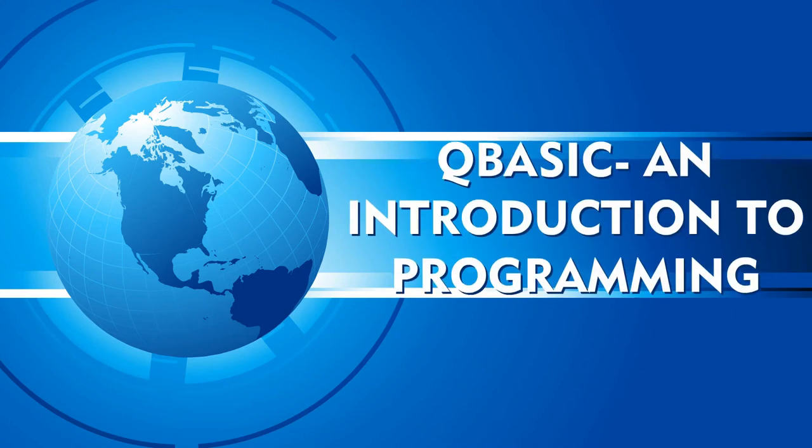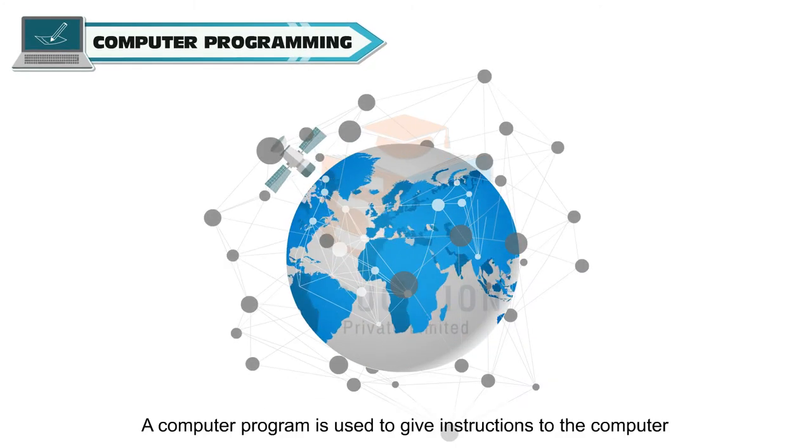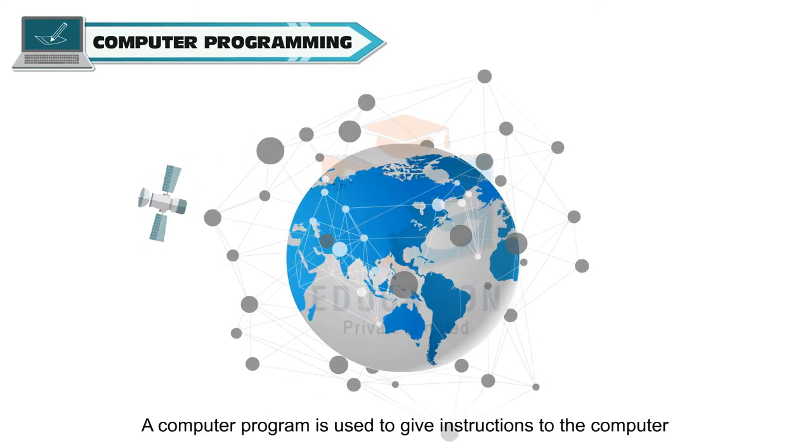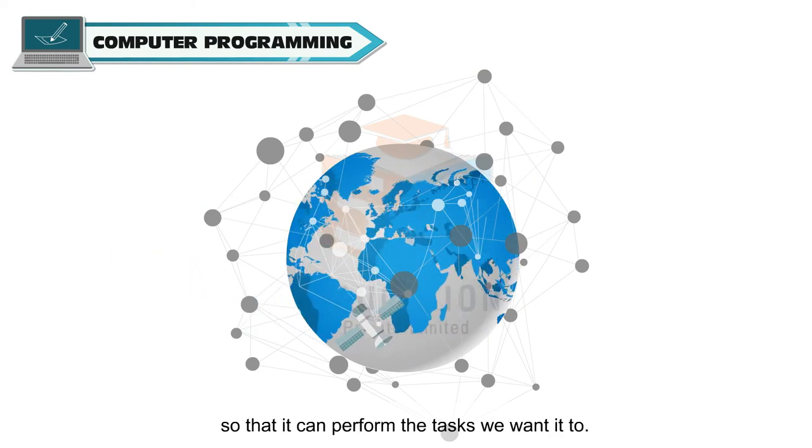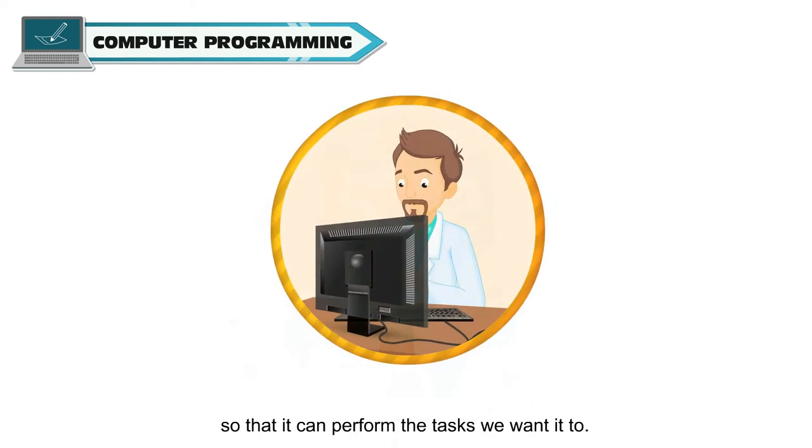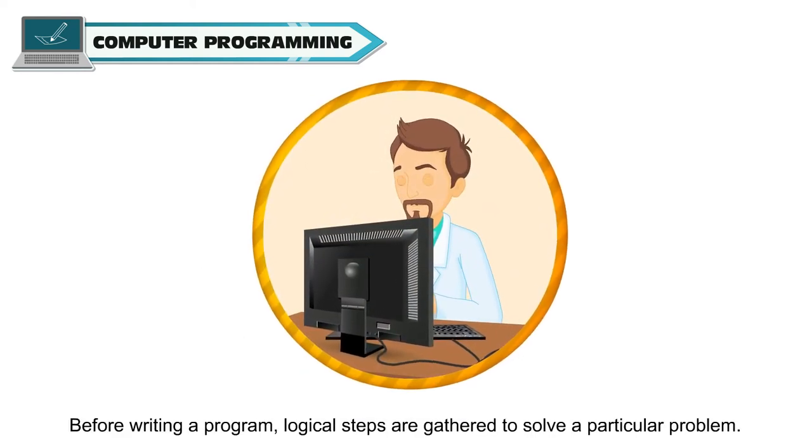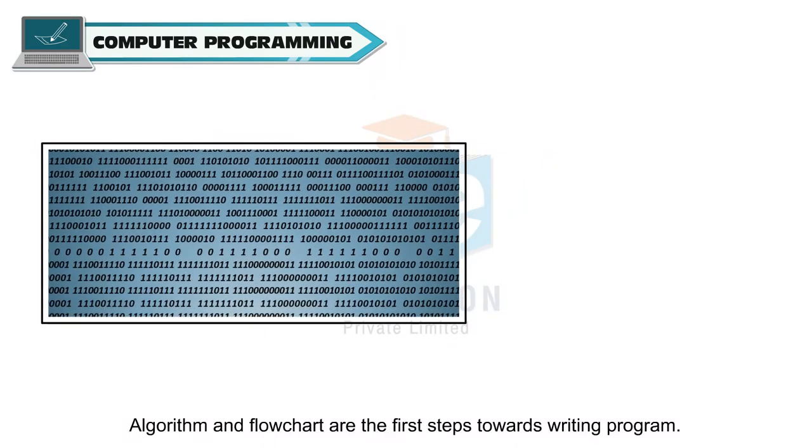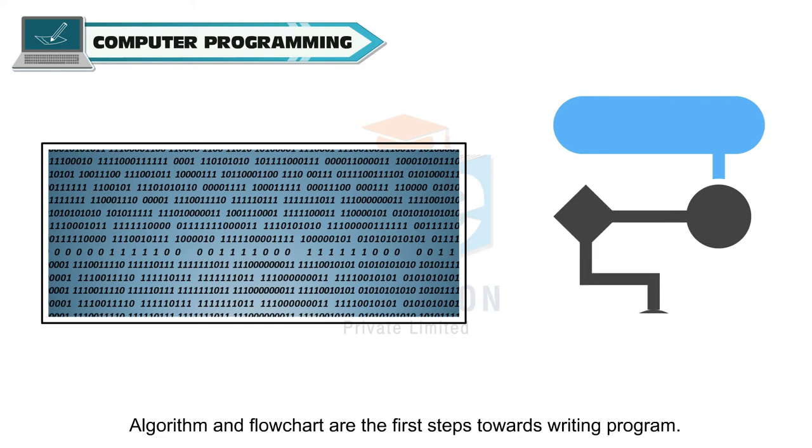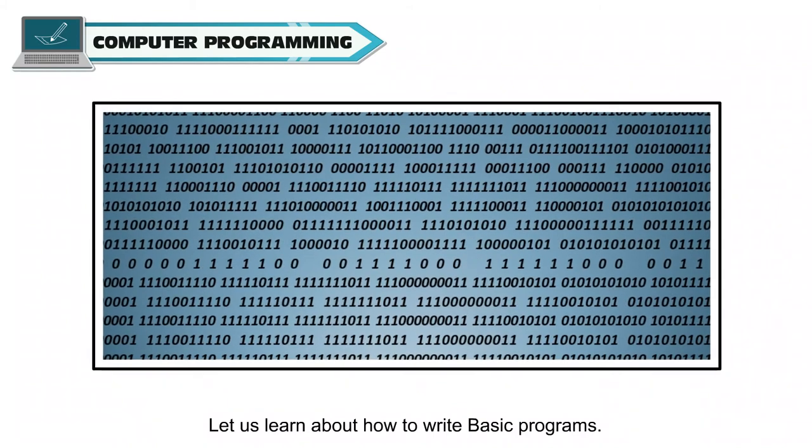QBASIC: An Introduction to Programming. Computer Programming: A computer program is used to give instructions to the computer so that it can perform the tasks we want it to. Before writing a program, logical steps are gathered to solve a particular problem.